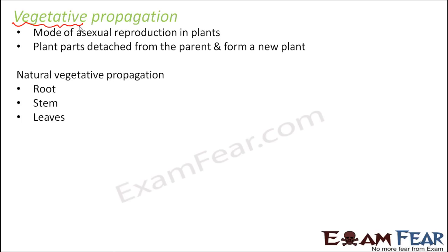Stems and leaves are also capable of showing natural vegetative propagation. Looking at these properties of roots, stems, and leaves, gardeners and farmers have started utilizing this facility to artificially propagate plants. So that is artificial vegetative propagation — forcefully making the plant to reproduce more and more.